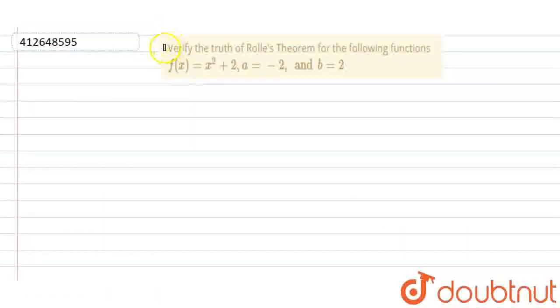Hello guys, so today our question is verify the truth of Rolle's theorem for the following functions. f(x) is equal to x square plus 2, a is equal to minus 2 and b is equal to 2.